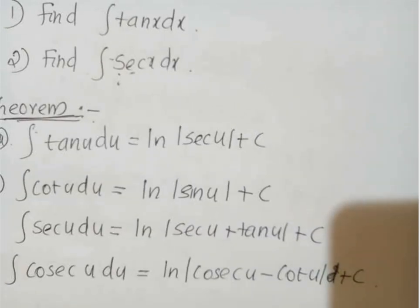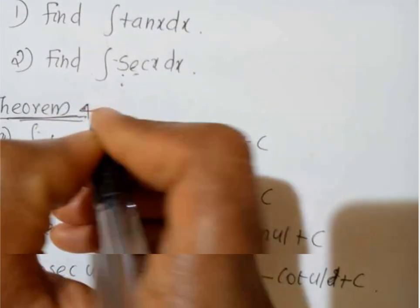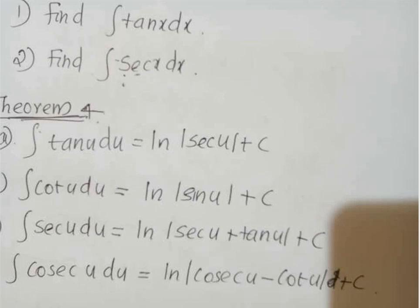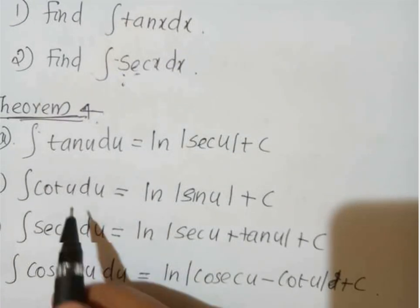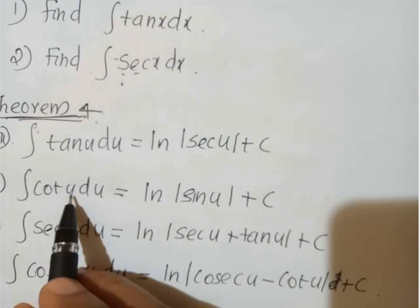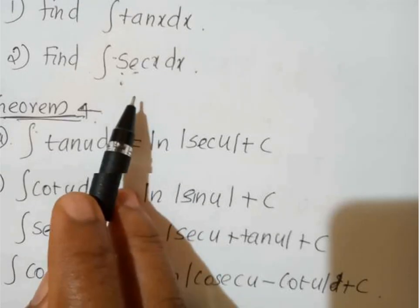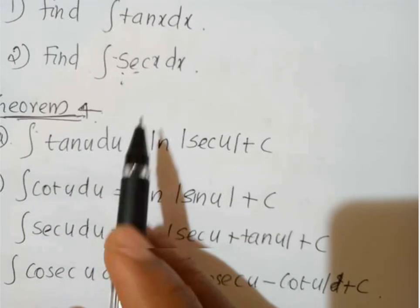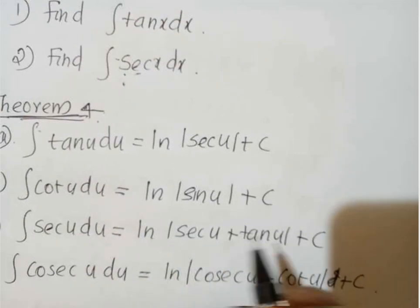This is Theorem 4. There is no need to prove this because you already know the result. In place of u, if it is x you know the result, and using the above techniques and chain rule you can find this result.